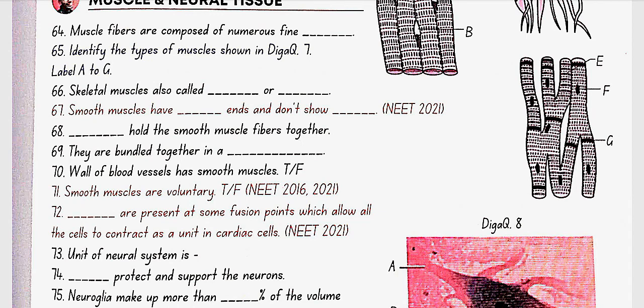No, this is false. Smooth muscles are voluntary. No, this is false. Intercalated discs are present at some fusion points which allow all the cells to contract as a unit in cardiac cells.